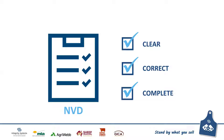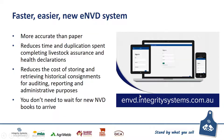LPA NVDs are a legal document and a part of your LPA record keeping, and therefore can be audited. On the eNVD system — if you would like to, and I certainly encourage you to — you can move across to this system. It's more accurate than the paper version, reduces time and duplication spent completing a variety of livestock assurance documents and health declarations, reduces the cost of storing and retrieving historical consignments for auditing purposes, and of course you don't need to wait for new NVD books to arrive.